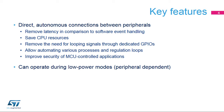The Interconnect Matrix offers two features. First, it ensures direct and autonomous connections between peripherals, allowing removal of latency in regards to software handling, thus saving GPIO and CPU resources. Second, the interconnection between certain peripherals can even operate during low power modes.